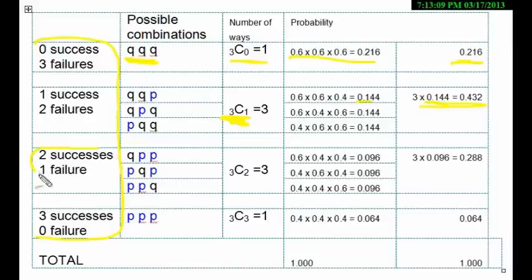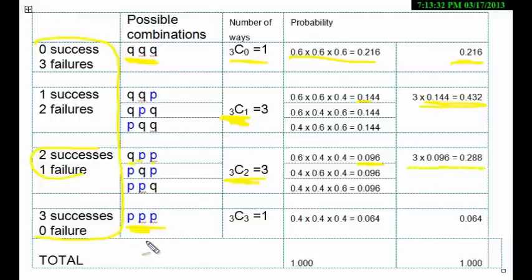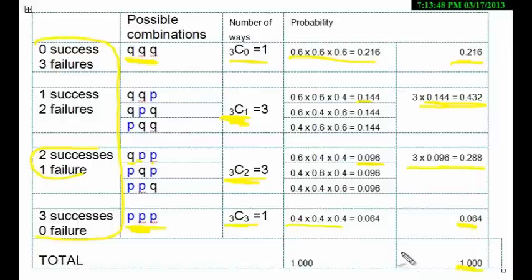For 2 successes and 1 failure: 2 blue and 1 non-blue, so two P's and one Q but in different orders. So 3 choose 2, and we get 0.4 × 0.4 × 0.6. We multiply by 3 for the arrangements. Last case: all successes — P, P, P. So 3 choose 3, and we get 0.4 × 0.4 × 0.4. When we add all these numbers, again we get 1. However, this manual method is difficult for a large number of trials — if n is large, it is difficult to use this method.